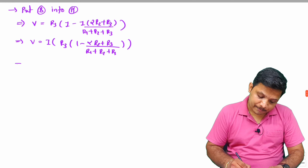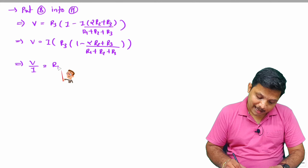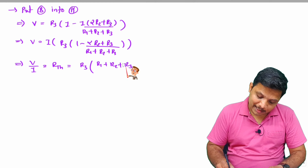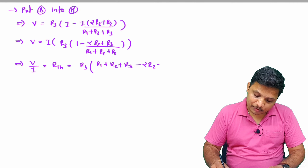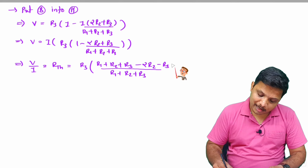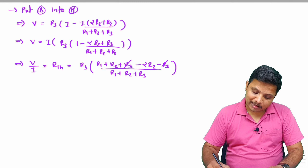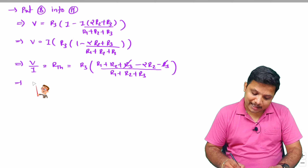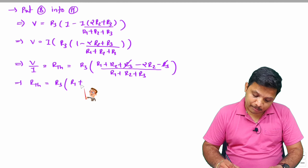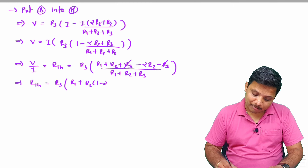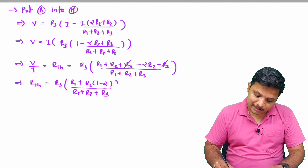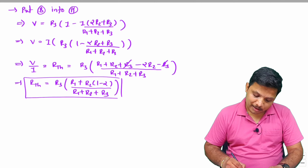Taking the LCM and simplifying, V divided by I equals RTH, which equals R3 · (R1 + R2 + R3 − alpha·R2 − R3) divided by (R1 + R2 + R3). The R3 terms cancel, giving RTH = R3 · (R1 + R2·(1 − alpha)) / (R1 + R2 + R3).